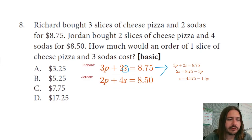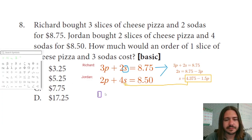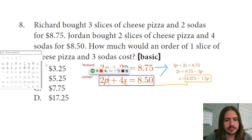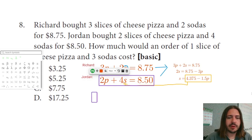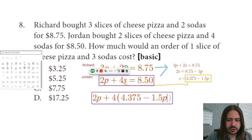Now that I have S isolated, I can take this expression for S and substitute it into the other equation. Then I'll have just a single equation to solve. I'm going to rewrite Jordan's equation: 2P + 4(4.375 − 1.5P) = 8.50.